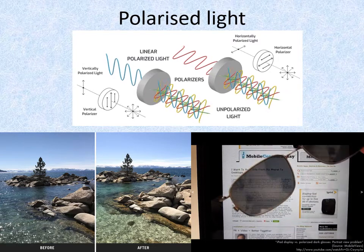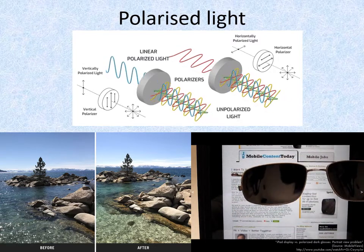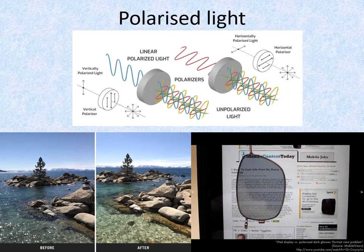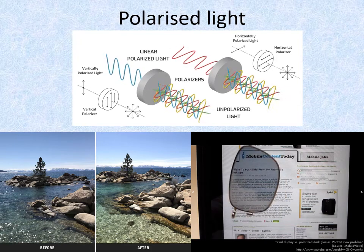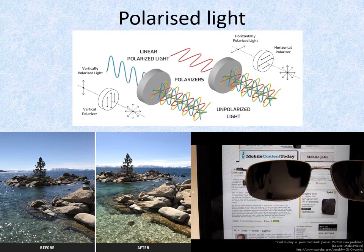Normal light coming from multiple sources is a jumble of waves vibrating in different planes. However, light reflecting off some surfaces such as water or metal, but not mirrors, is polarised as it reflects. This means that the waves are converted to be in one plane.